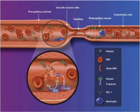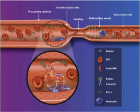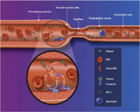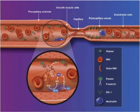Sickle cell vaso-occlusive crisis is a painful complication of sickle cell disease induced by obstruction of small blood vessels by crystallized sickle cells, leading to ischemic injury to several organs including bone. The bone pain is usually difficult to distinguish from acute osteomyelitis.